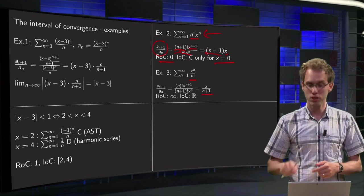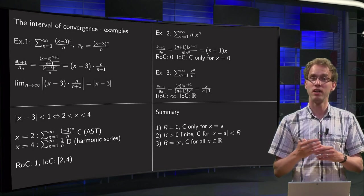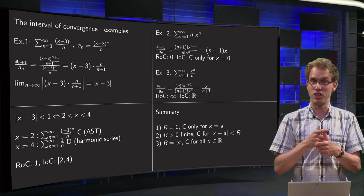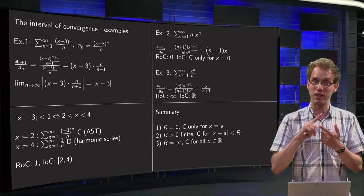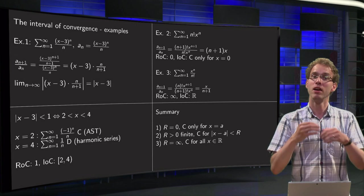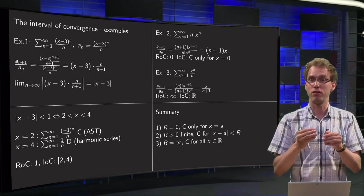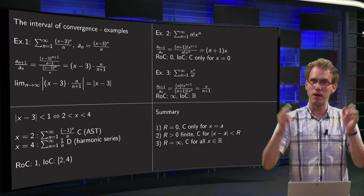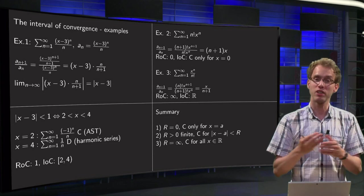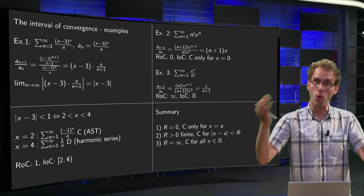So we have seen three cases, and actually that's all there is. The radius of convergence can be 0, then your only convergence is for x at the centre, for x equals a. Your radius of convergence can be some non-zero number R, then you have convergence in the area a-R to a+R, where you still have to check what is happening at the boundaries. Or in the third case your R can be infinity, and then in that case you have convergence for all x in R.